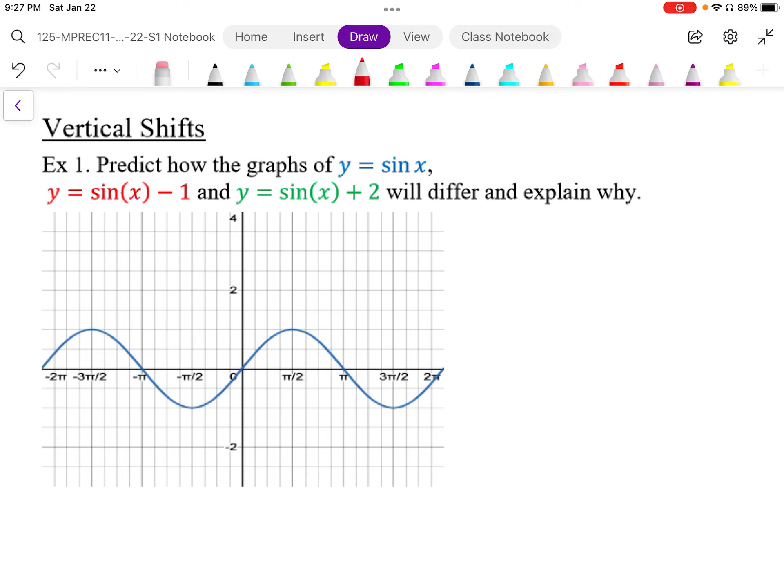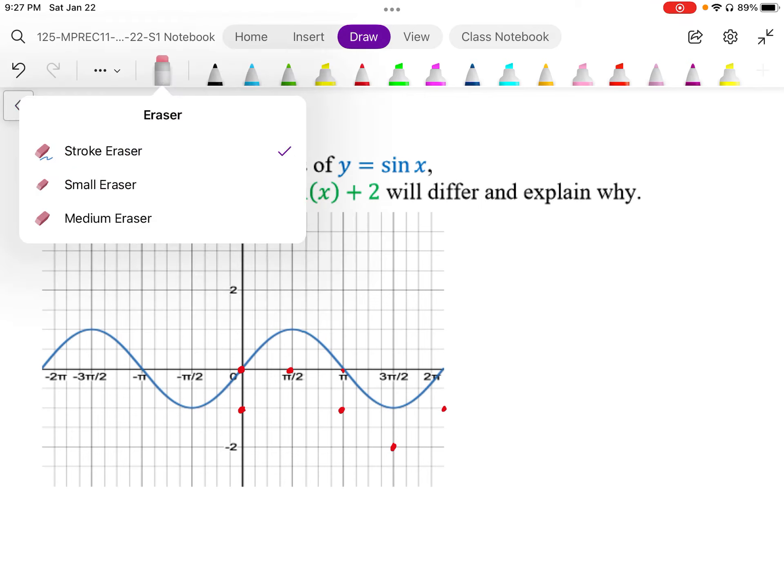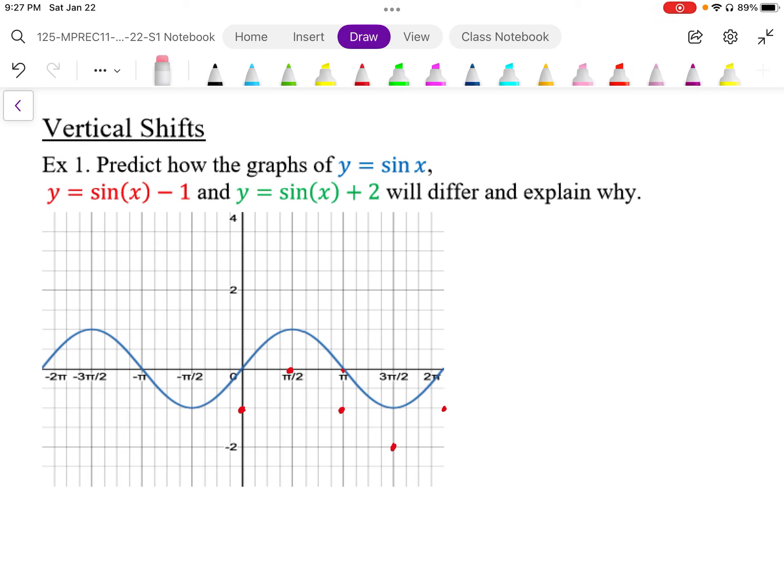We should see that the point at 0 now is at negative 1. The point at 1 is down at 0. 0 is down to negative 1. Negative 1 is now down to negative 2, and we get back up to 0. And so that graph ends up being vertically shifted down 1.